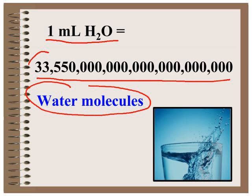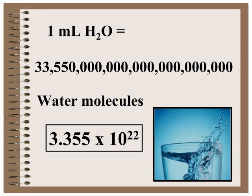We want to turn this number and keep this part of the number, but we want to put these zeros as a power of ten. So again, we're going to write this number as 3.355 times 10 to the 22nd power.